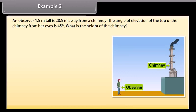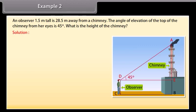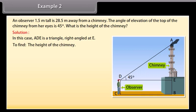An observer 1.5 meters tall is 28.5 meters away from a chimney. The angle of elevation of the top of the chimney from his eyes is 45 degrees. What is the height of the chimney? Here AB is the chimney, CD the observer, and angle ADE is the angle of elevation. In this case, ADE is a triangle, right angled at E, and we are required to find the height of the chimney.